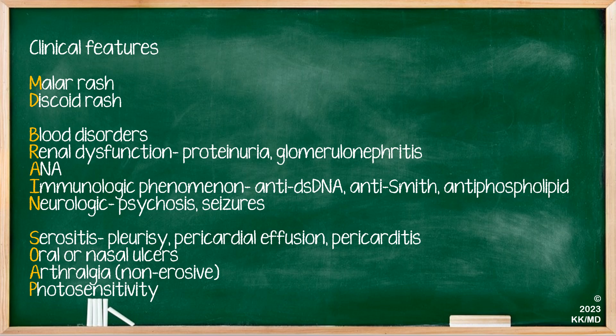As you can see on the board, we have M for Malar rash, which is the classic butterfly rash that comes with SLE. You have discoid rash, which is the other rash that can sometimes present in SLE — be careful not to mix this with discoid lupus, as that is another entity on its own. You can have blood disorders, including pancytopenias or anemias such as haemolytic anaemia. You can have renal dysfunction, in the case of proteinuria or glomerulonephritis. You very frequently have a positive ANA, and you can have other immunologic phenomena, in the way of autoantibodies such as anti-dsDNA, anti-Smith, and antiphospholipid. These are more specific than your ANA for the diagnosis of SLE.